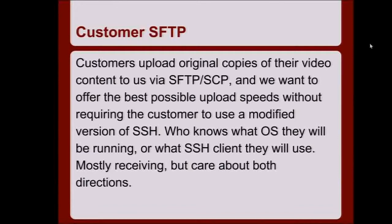On FreeBSD we can build OpenSSH with the HPN patches and push that package out to all our machines, but there's no pre-built package for CentOS. The fourth use case is customers uploading videos to us — video-on-demand content sent over SSH or SFTP. In that case, we have no control over the version of SSH the end user is using. They might have a 10-year-old copy of WinSCP on their Windows box. We wanted to look at what we could do to the SSH server to receive data faster without requiring any modifications to the client.